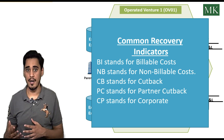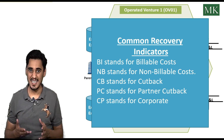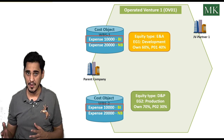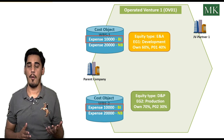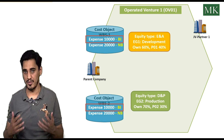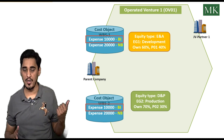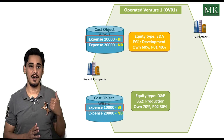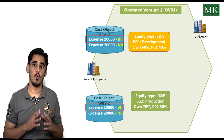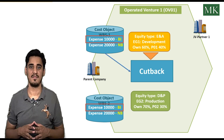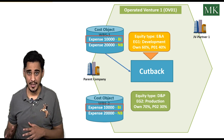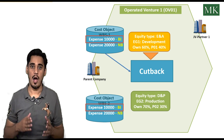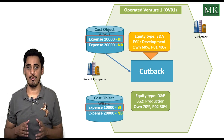These recovery indicators are pre-configured in SAP S/4HANA, but can be changed or newly configured in customizing. Any cost or revenue posted with recovery indicator BI (billable) will be distributed between the operator and the joint venture partner when the cutback transaction is executed. For example, an amount of 10,000 expense posted on cost objects WBS1 and WBS2 with recovery indicator BI will be distributed between the operator and JV partner 1 after the cutback process is executed.